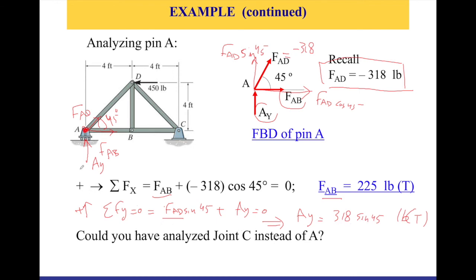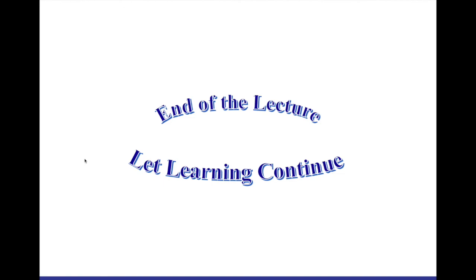This shows how to analyze each joint — and then we move to joint C. I want you to think about whether you could have analyzed joint C instead of joint A. I always advise students to go with the joint with the least number of unknowns, especially for reactive forces. We'll solve more problems focusing on identifying reactive forces from support reactions before analyzing joints. I hope this example was helpful. Thank you for watching, and until the next video. Bye.